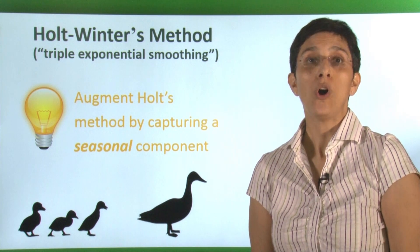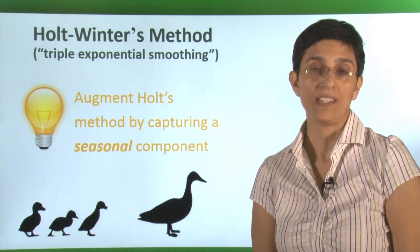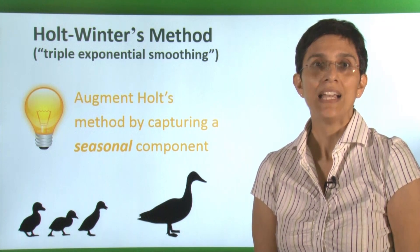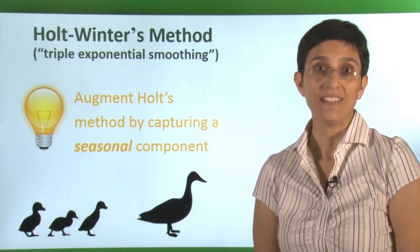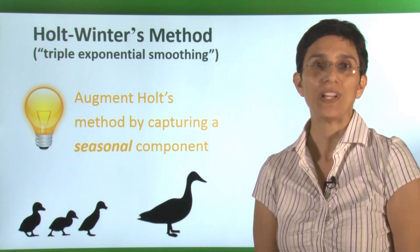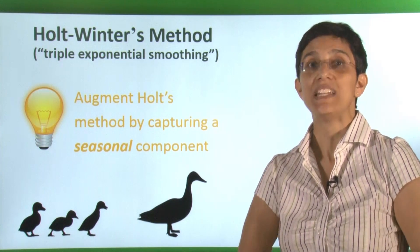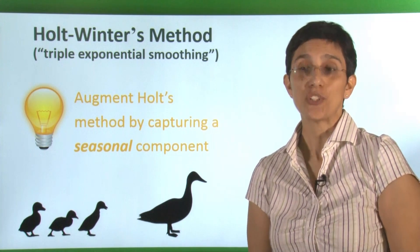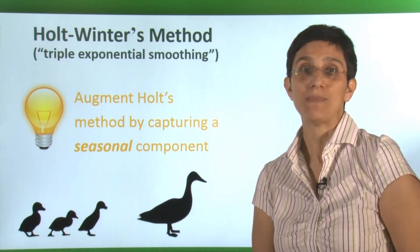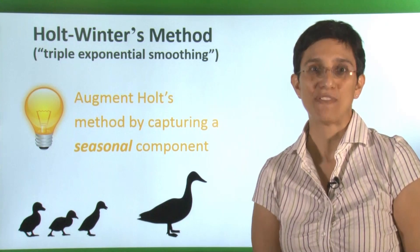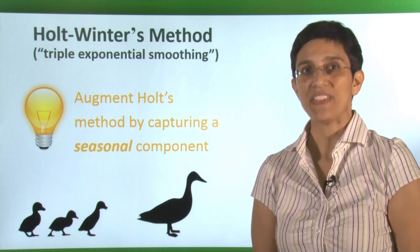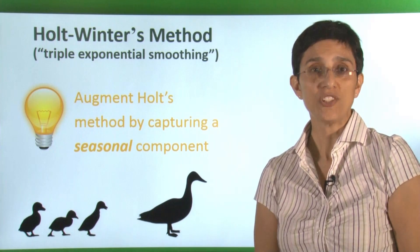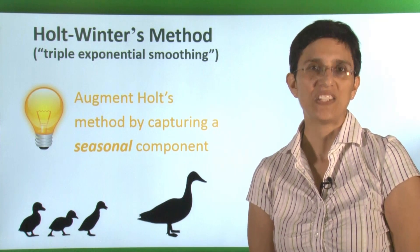Winters method, also called Holt-Winters method, and even sometimes called triple exponential smoothing, takes the idea of Holt's method and adds a seasonal component to create an even more complex system. Winters was actually a student of Holt, and he took his master's idea and extended it further. That's why we see a method that looks similar to Holt's method, but with one additional equation for updating seasonality.